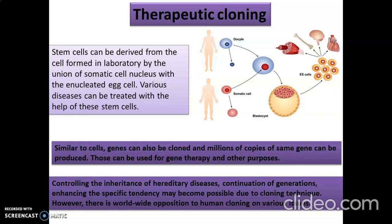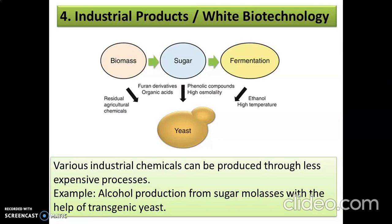The benefits of cloning include controlling the inheritance of hereditary diseases, continuation of generation, and enhancing specific tendencies. These are all possible due to cloning. Various industrial chemicals can also be produced through less expensive processes — for example, alcohol production with the help of yeast and sugar molasses.